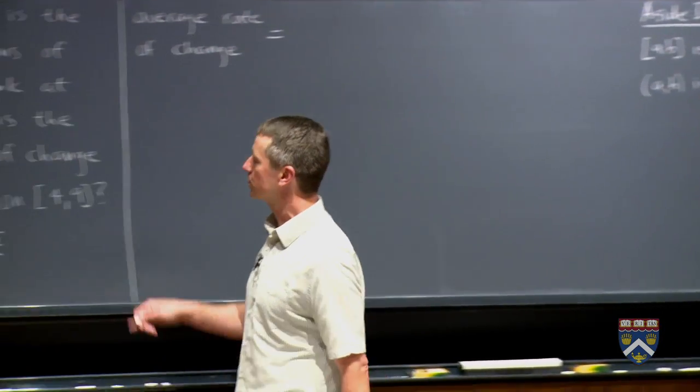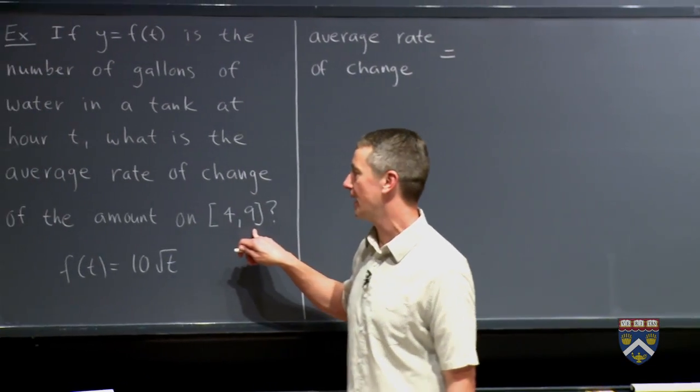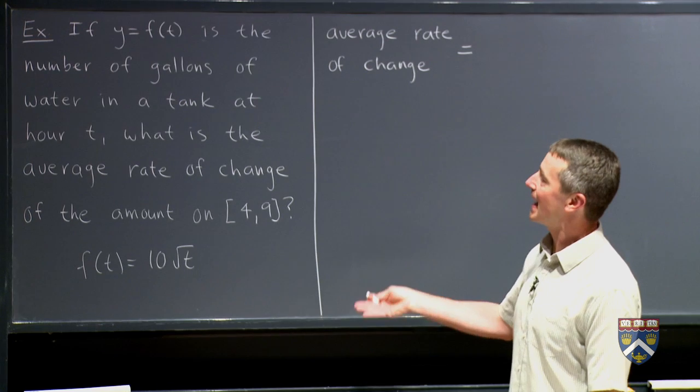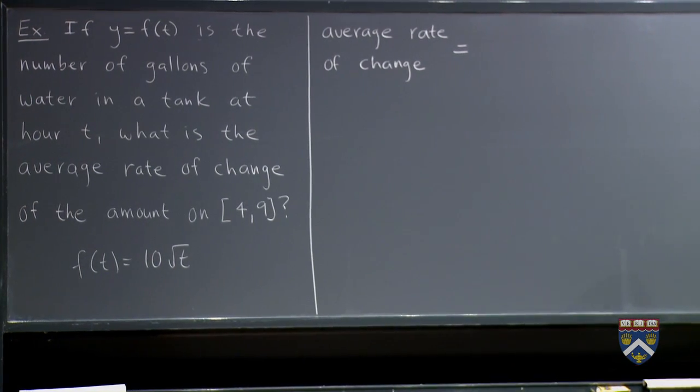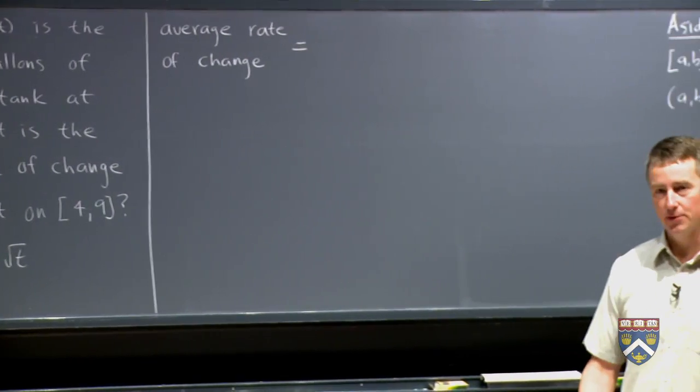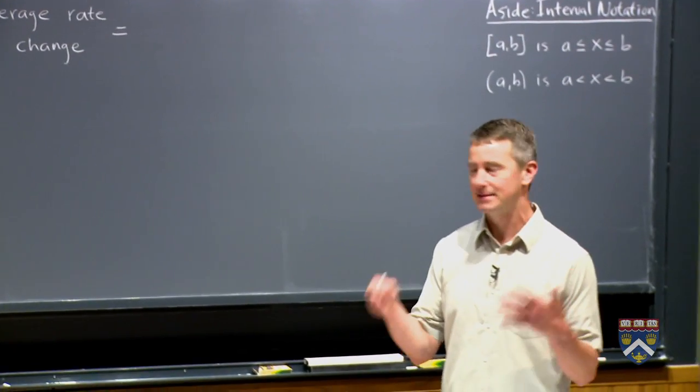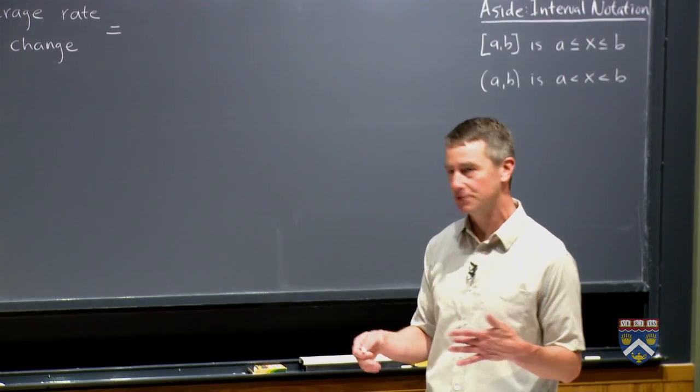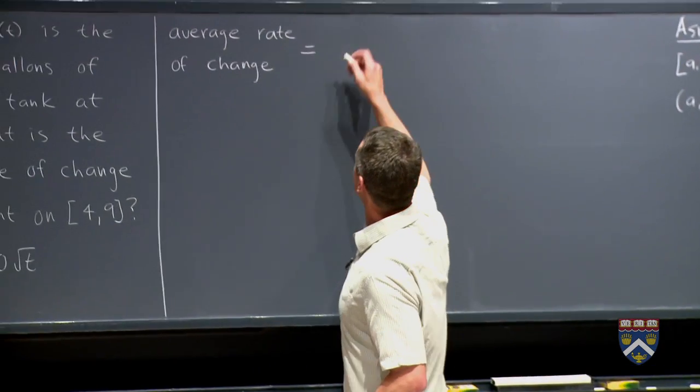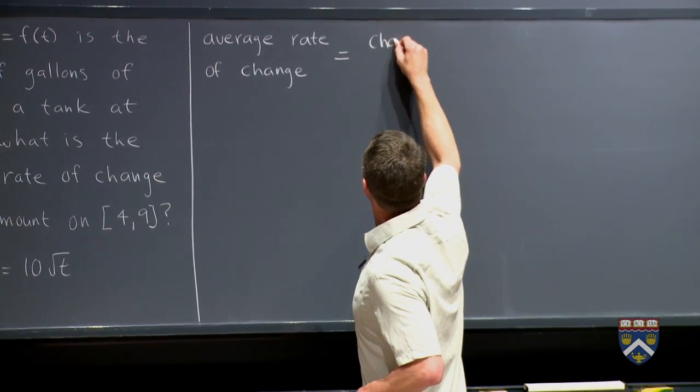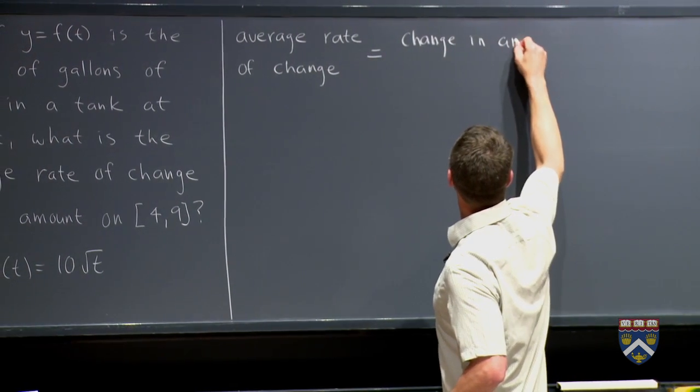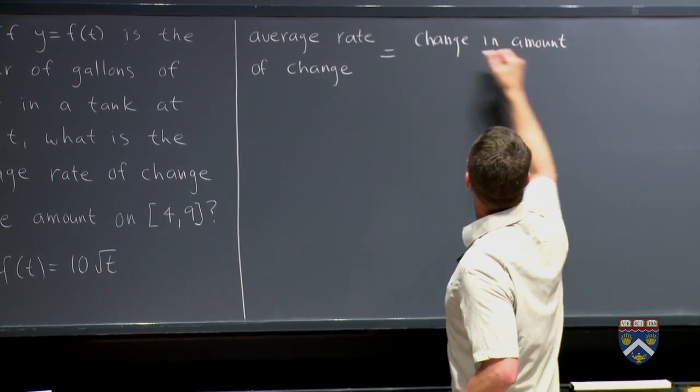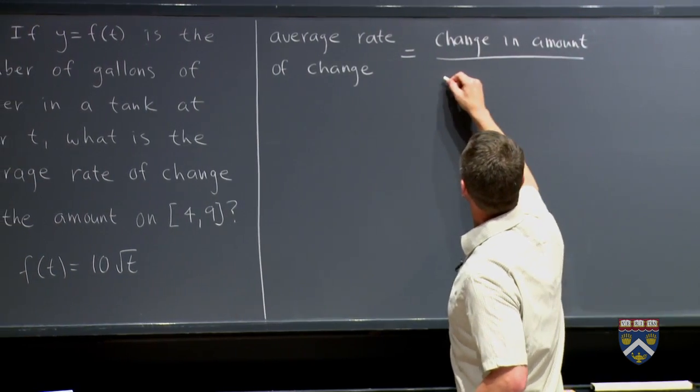So now to get back to this, we're looking at the interval from time 4 to time 9. And we want to figure out what is the average rate of change of this quantity. So you should ask yourself how you would compute this. And I hope that you'll think about something like you want to figure out what is the actual amount of change of the water. So the change in the amount. And we'll talk about in a minute how we can find that change in the amount divided by the change in time.